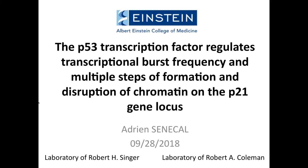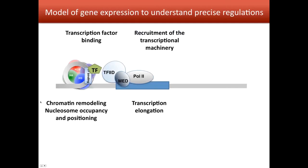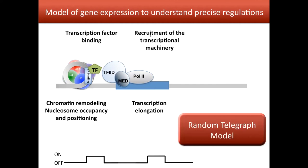Gene expression is a very complex process which involves many different steps. There are transcription factors which can bind on the promoter of different genes, chromatin remodeling, nucleosome occupancy and positioning, and the recruitment of the transcriptional machinery and transcriptional elongation. Interestingly, all of these different processes can be linked together — for example, transcription factor binding can induce chromatin remodeling factor recruitment, and remodeling can move nucleosome occupancy.